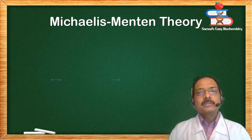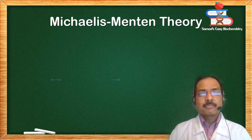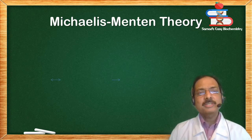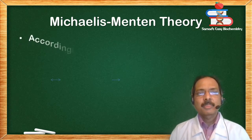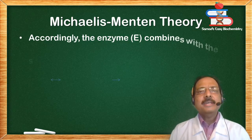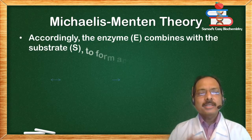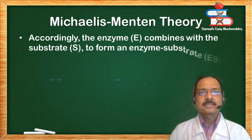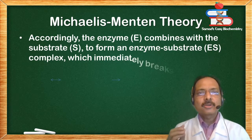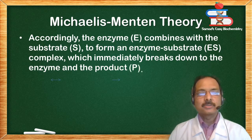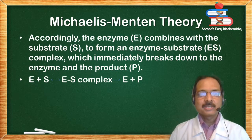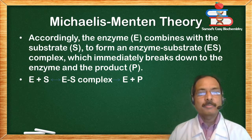Michaelis-Menten theory: the enzyme E combines with the substrate S to form an enzyme-substrate complex or ES complex, which immediately breaks down to the free enzyme and the product is released. So, E plus S gives you ES complex, which then dissociates into free enzyme and product.